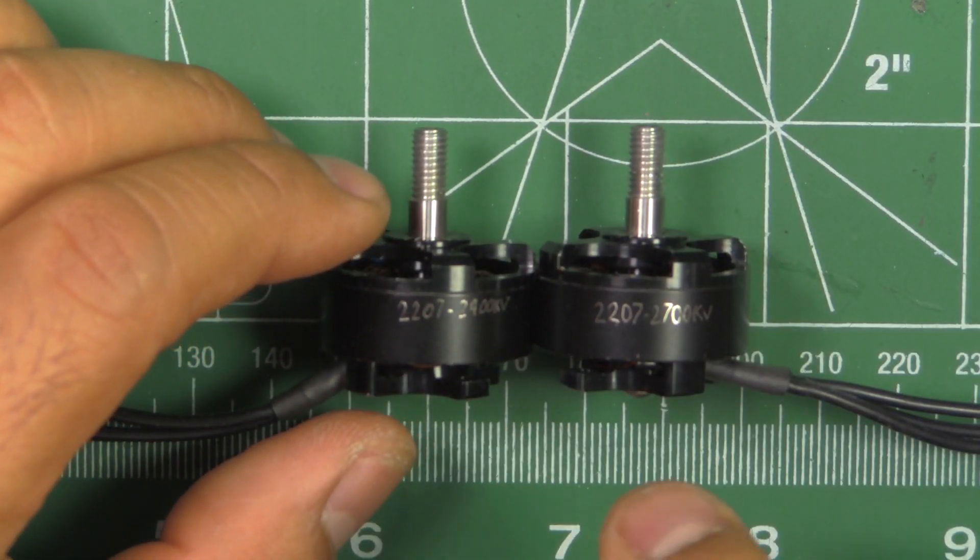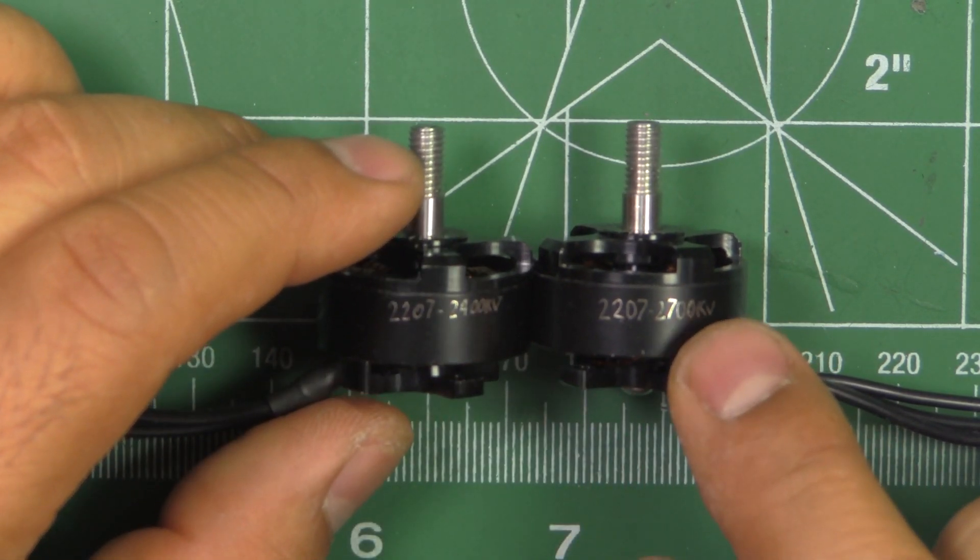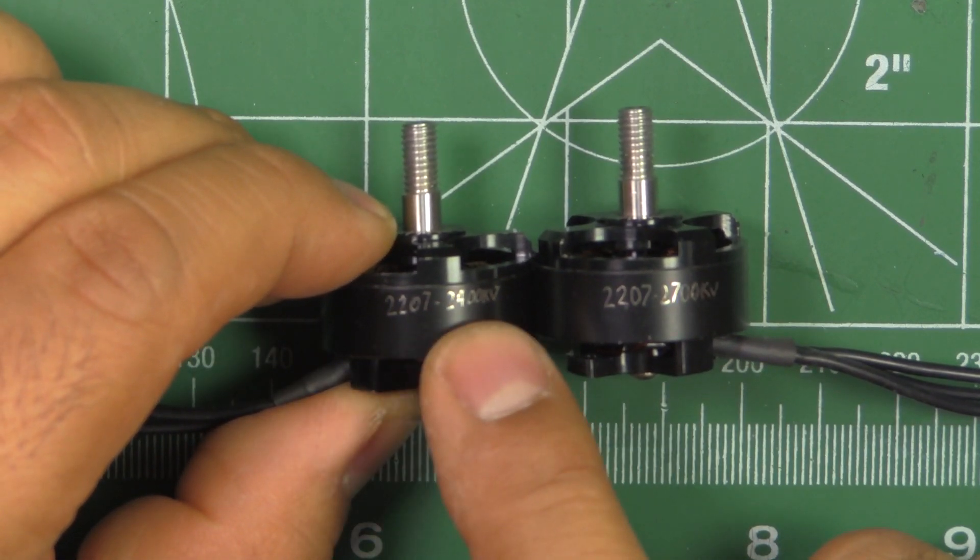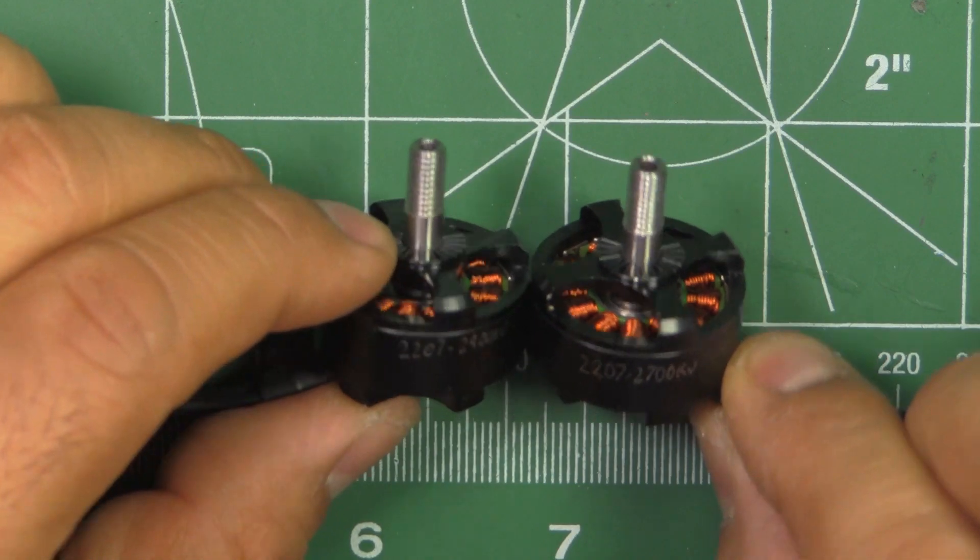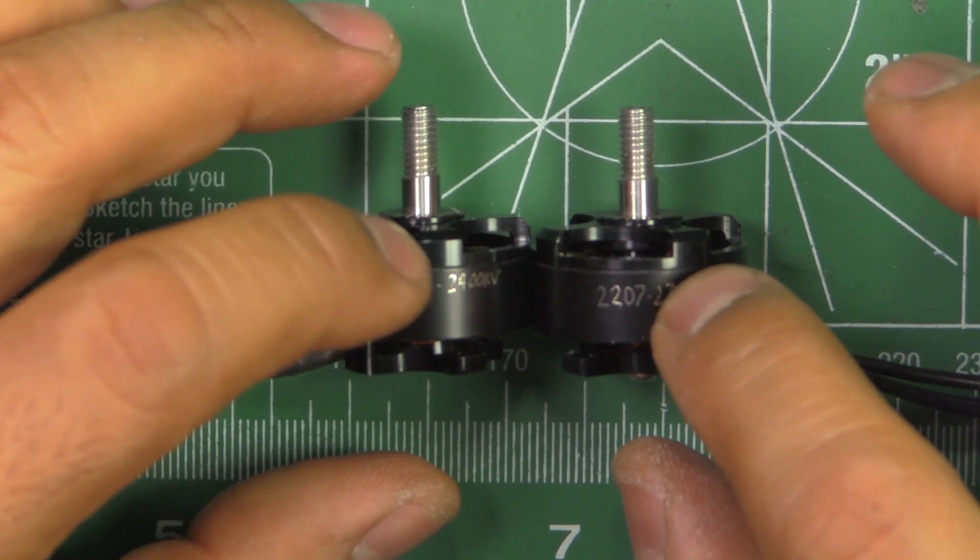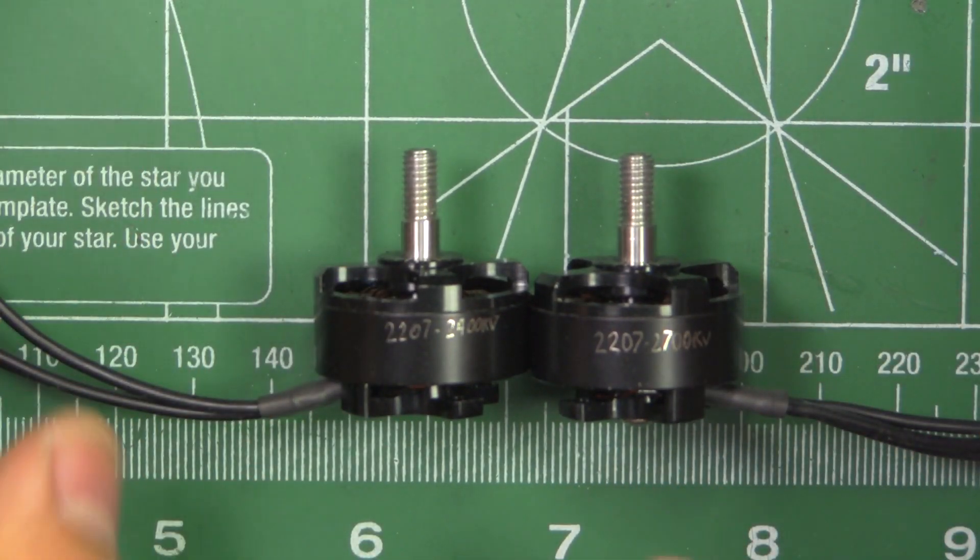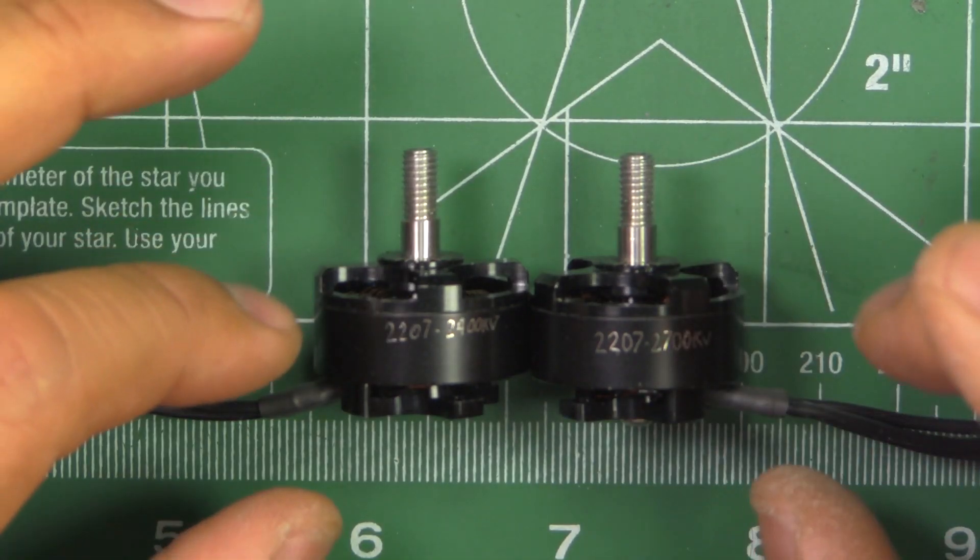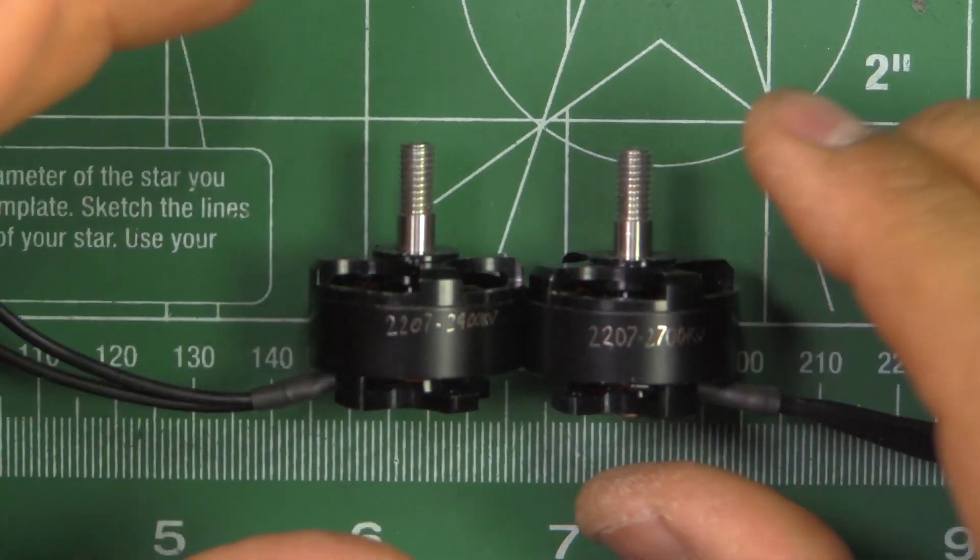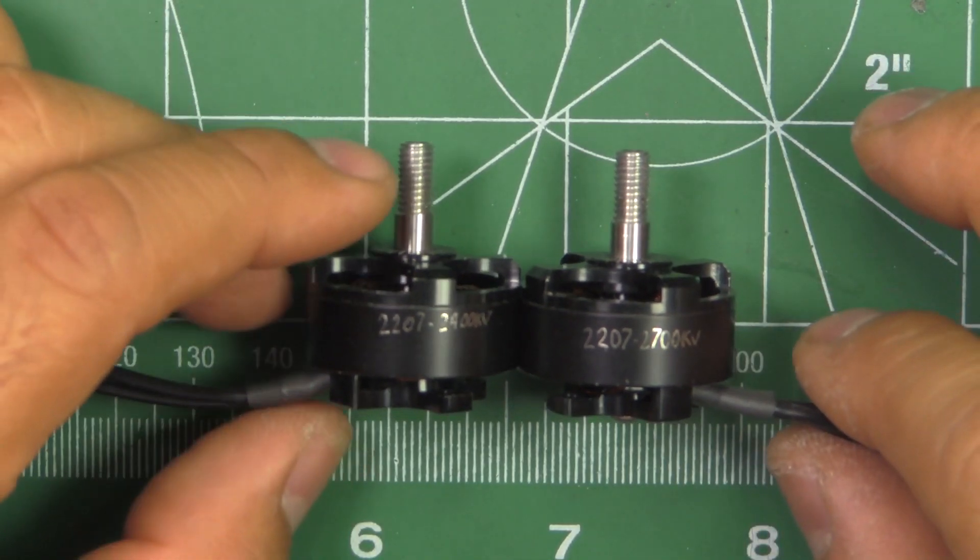Thanks MyRC Mart for sending me these prototypes so I can test them and share the results with you guys. So these are the RCX 2207, 2400 and 2700 KV. As you can see I just scribed the motor KV values here because they were not labeled so I didn't want to get them confused. These are prototypes and they wanted to know how these motors perform and how they compare to the other top motors. They want a competitive product.